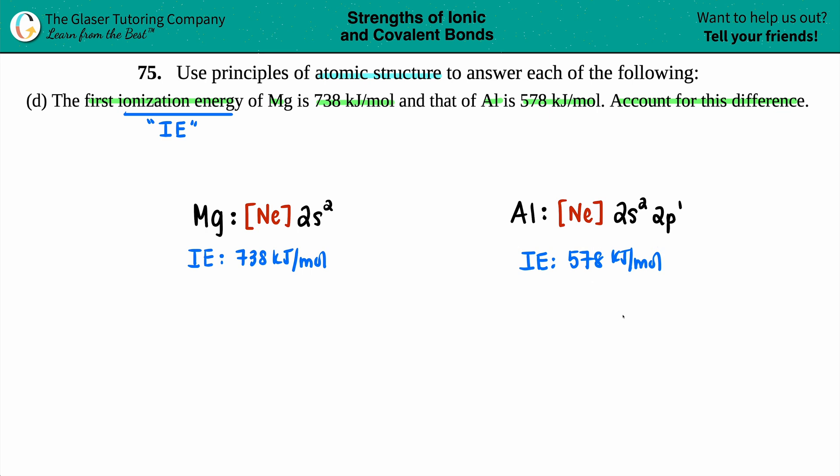This all stems from what it means to have a first ionization energy. Ionization energy, IE, is always the amount of energy it takes for that element to become an ion. But it's a very specific ion—is it the cation, the positively charged ion, or is it the anion which is negative? It's the cation. So the ionization energy is always the energy needed to lose an electron to become positive. The energy required or needed to lose an electron.